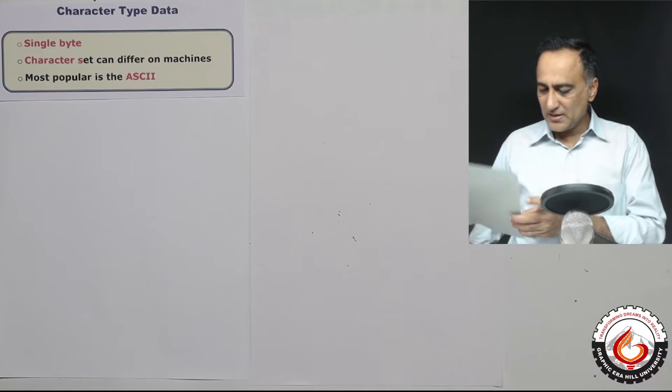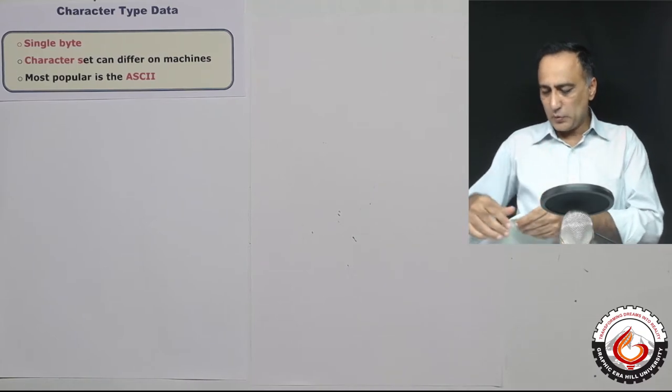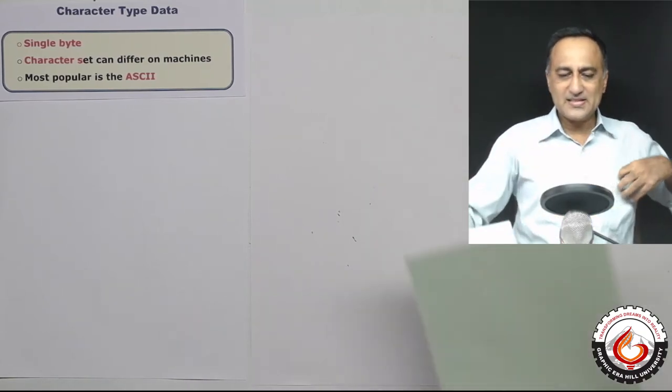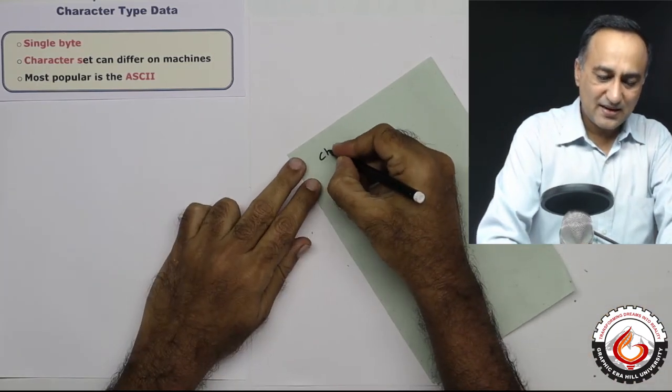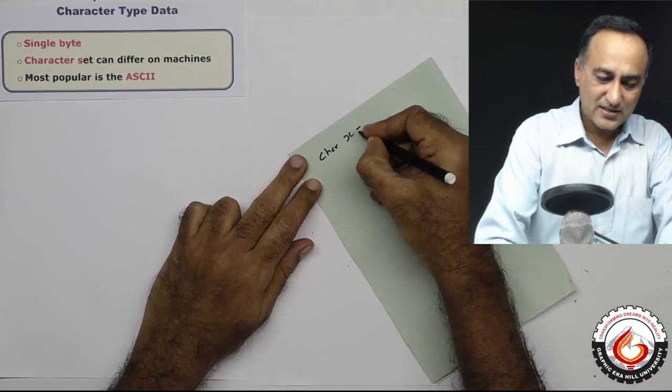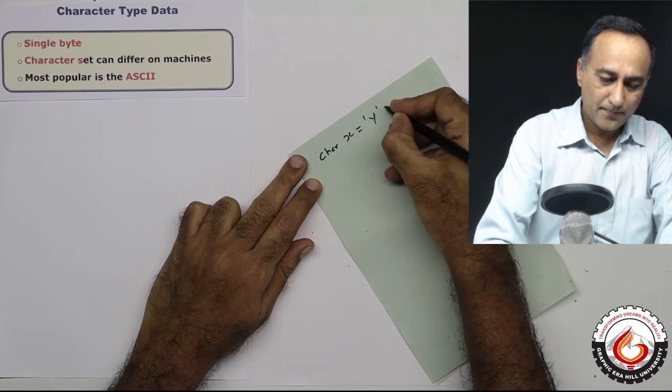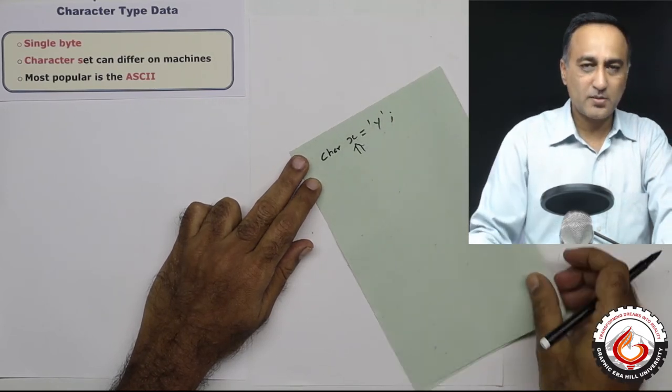What it means is suppose I declare a character type of variable. Let's say I go ahead and declare something like this. I say char x is equal to y. I have declared a character type of variable.